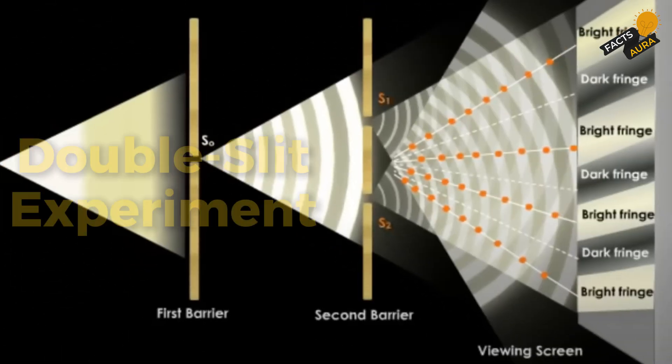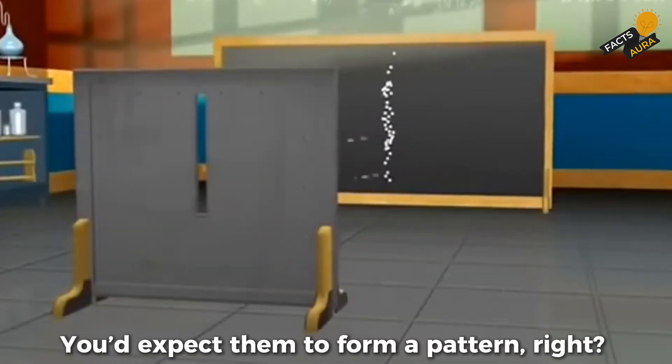Next, let's talk about the double slit experiment. Imagine firing tiny particles at a screen through a slit. You'd expect them to form a pattern, right? But when two slits are used,